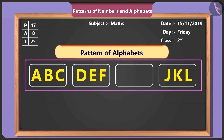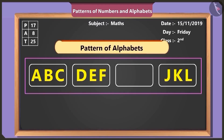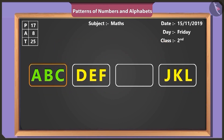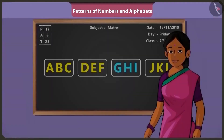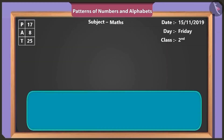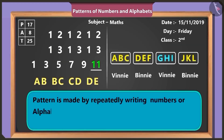Now solve this puzzle made of an alphabet pattern. This pattern is made of the English alphabets A, B, C, D, and each term of this pattern has three alphabets. So, following A, B, C and D, E, F, the next term will be G, H, I, because it is followed by J, K, L. Well done, Vinny. Children, remember that a pattern is made by repeatedly writing numbers or alphabets in a specific order.